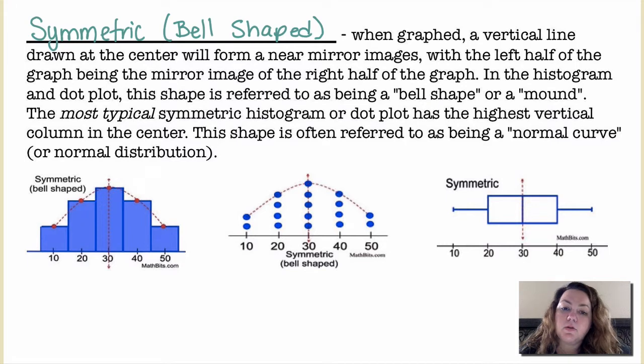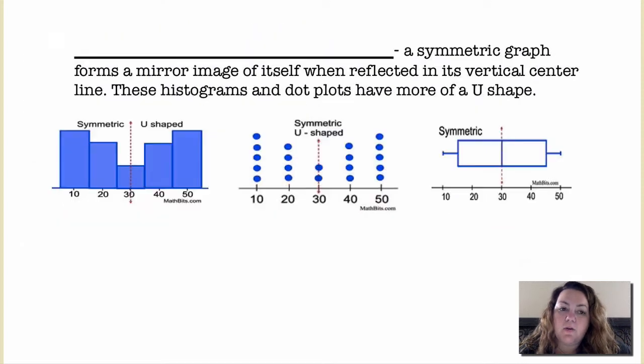The most typical symmetric histogram or dot plot has the highest vertical column in the center. The shape is often referred to as being a normal curve or normal distribution. That's what that would look like as a histogram, a dot plot, and somewhat how it would look as a box plot. You have to be very careful with the shape of box plots.